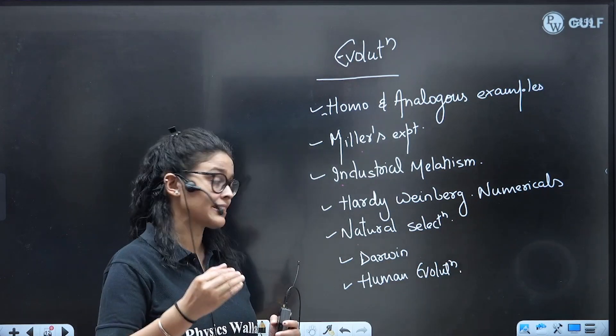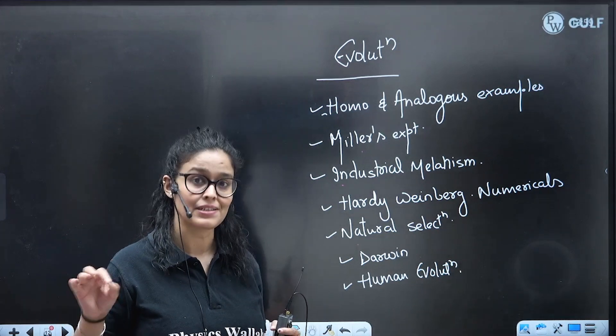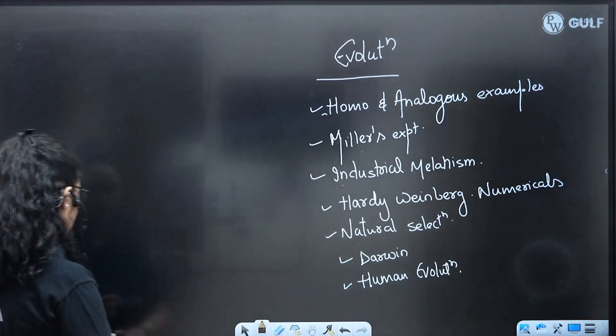Natural selection - all three types. Darwin's voyage in Galapagos Islands, like observations in the Galapagos Islands, Darwin's finches. Human evolution - important.